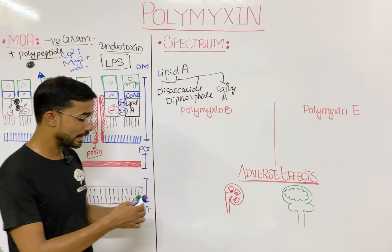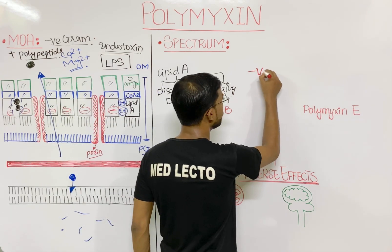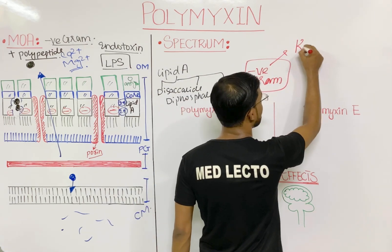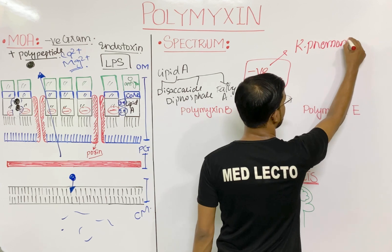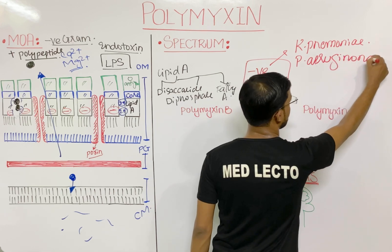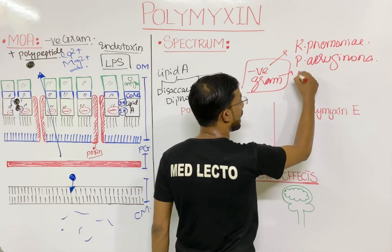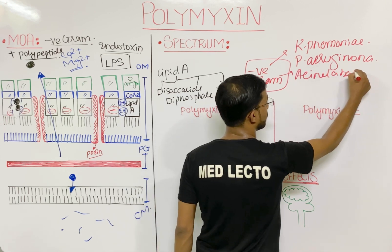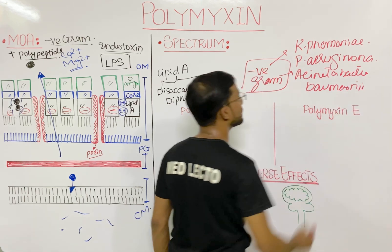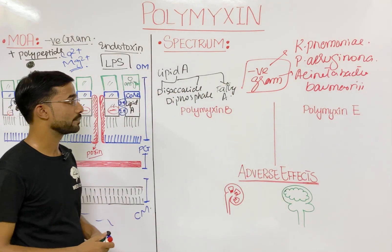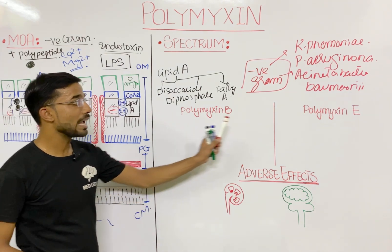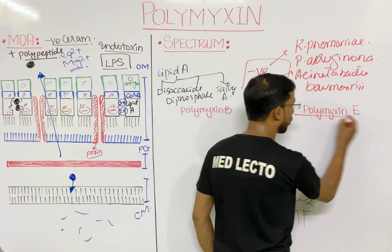If we discuss the spectrum, polymyxin is used for gram-negative bacteria. It includes Klebsiella pneumoniae, Pseudomonas aeruginosa, and Acinetobacter baumannii. The most important polymyxins used clinically are polymyxin B and polymyxin E, which is also known as colistin.